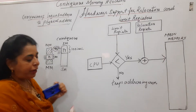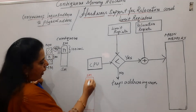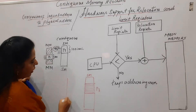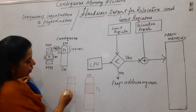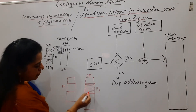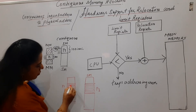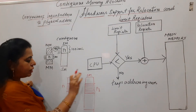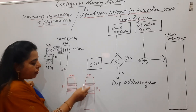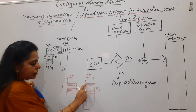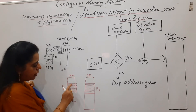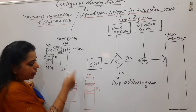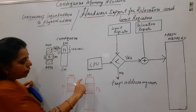Suppose this is the secondary memory and you have a process P1 with seven instructions. When process P1 is allocated space in the main memory, all seven instructions will be placed in the same sequence in main memory. The only difference is the starting address of instruction 1 will be different — in secondary memory it is X, in main memory it may be Y. But the instructions appear in the same sequence, placed one after the other contiguously.